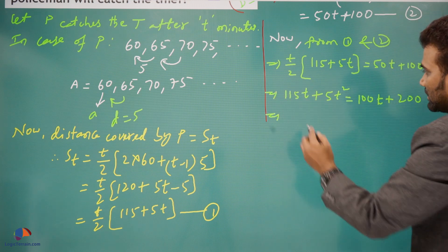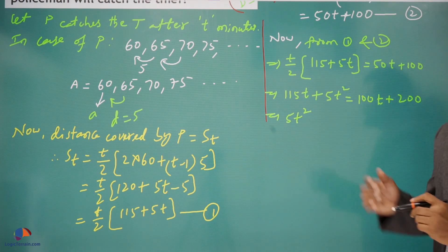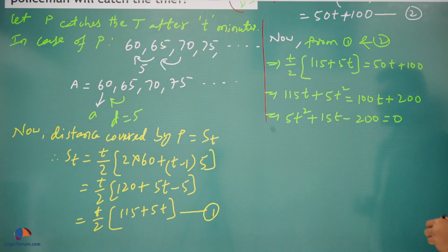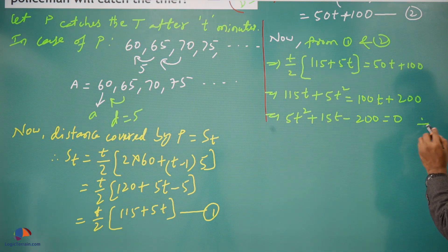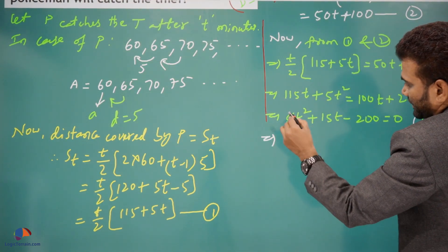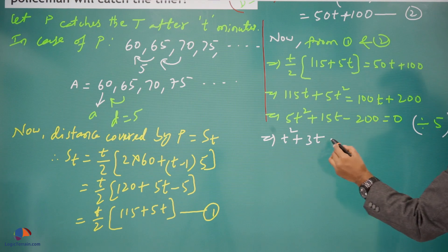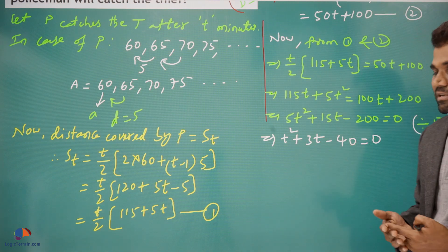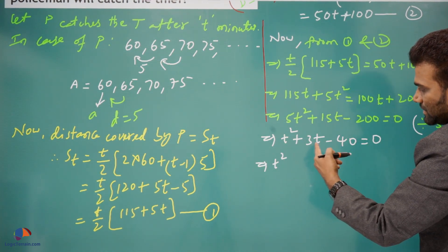Bringing all terms to one side: 5t² + 115t − 100t − 200 = 0, which gives 5t² + 15t − 200 = 0. All coefficients are multiples of 5, so dividing throughout by 5: t² + 3t − 40 = 0. Now we have a quadratic equation. We will solve it by splitting the middle term.